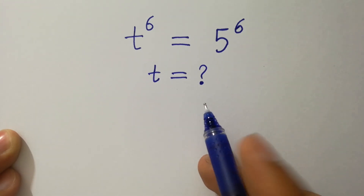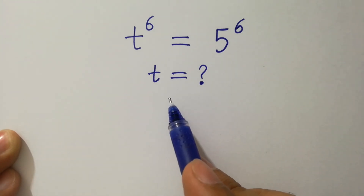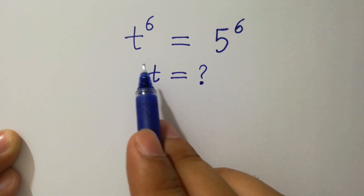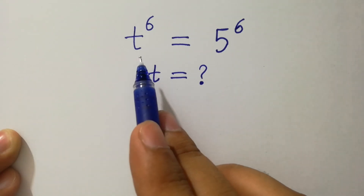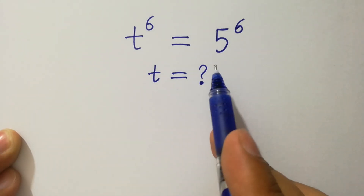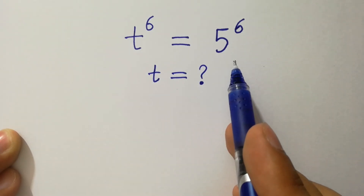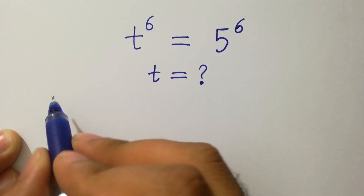Hello friends, find the value of t if t to the power 6 equals 5 to the power 6. Let's have a solution.